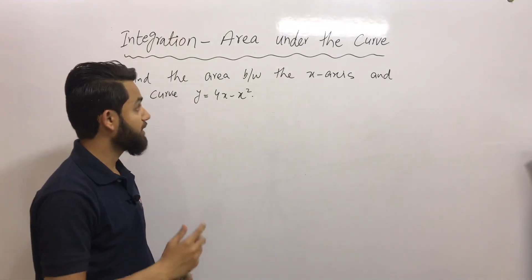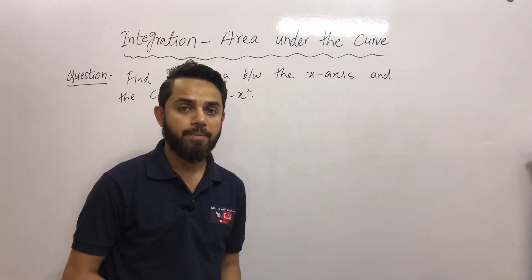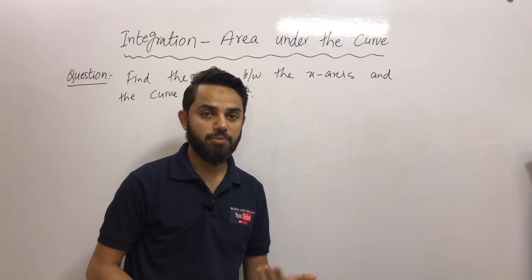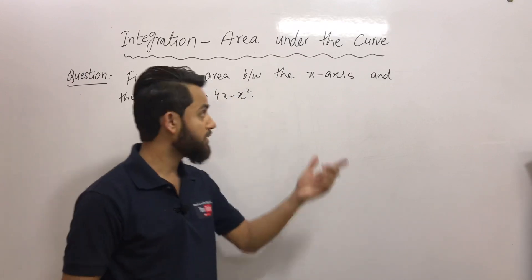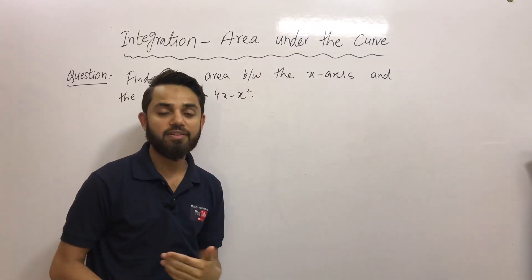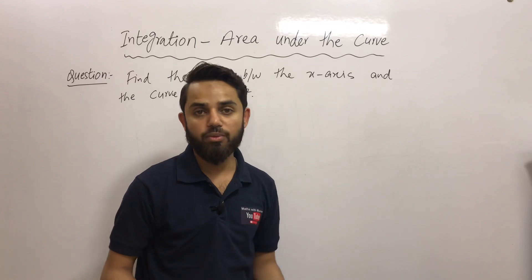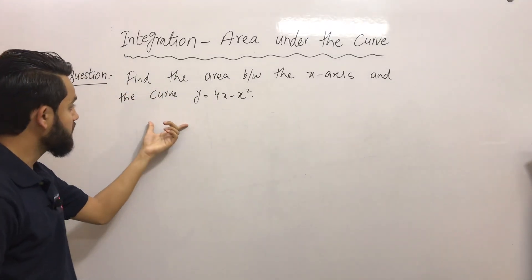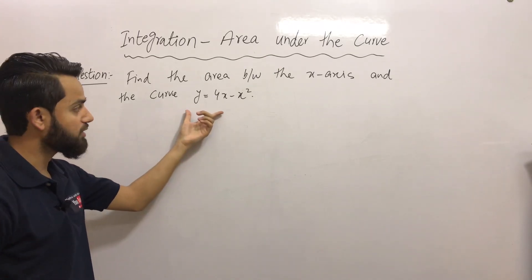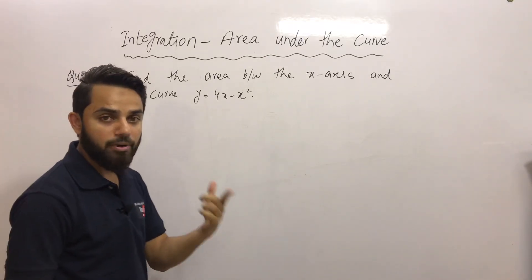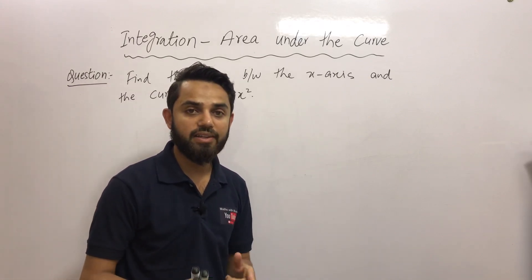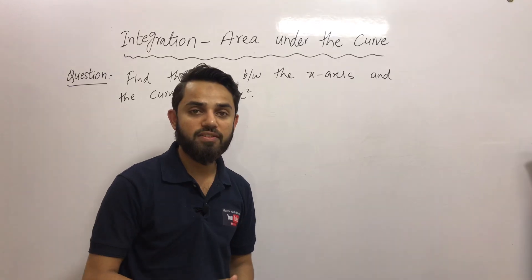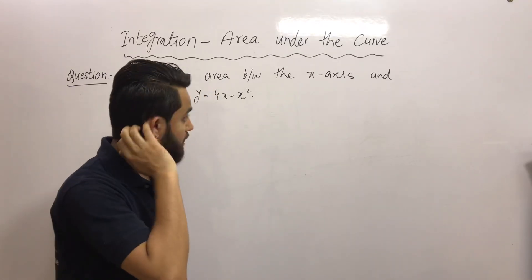In the first part of integration — area under the curve — we learned how to calculate the area under the curve of any given function. In this video, we are going to cover two different problems related to the same topic. The problem says: find the area between the x-axis and the curve y = 4x minus x squared. The most important thing to understand is that finding area under the curve means we are dealing with a definite integral, where limits of integration are given.